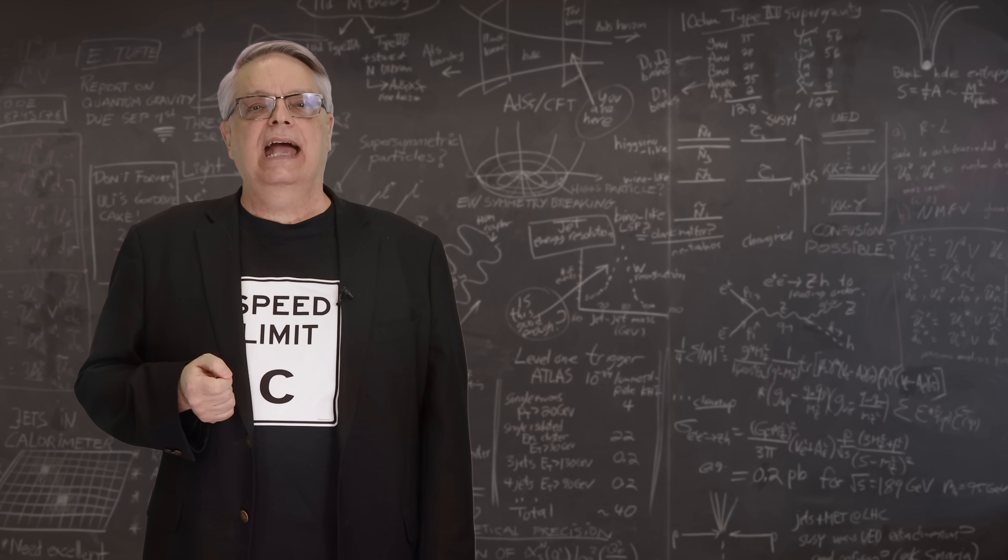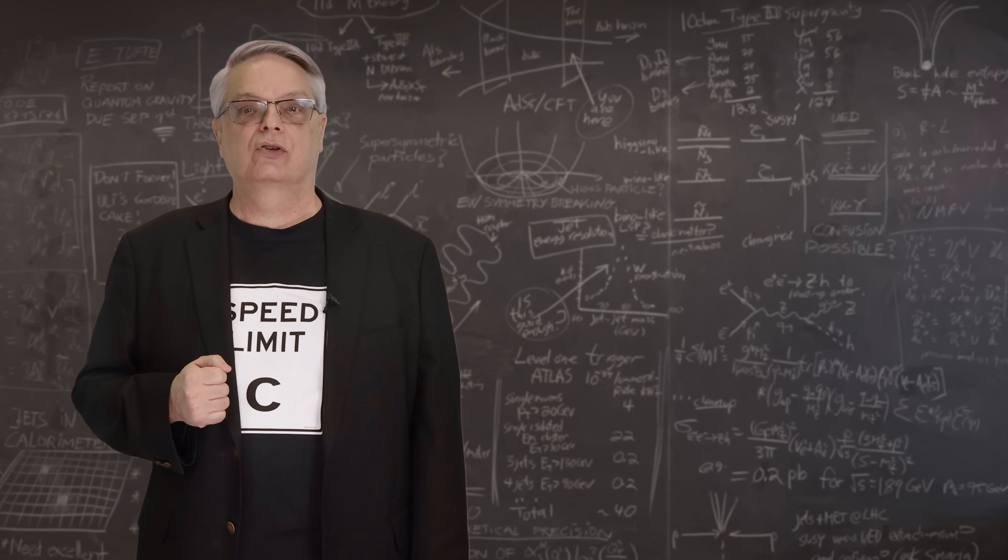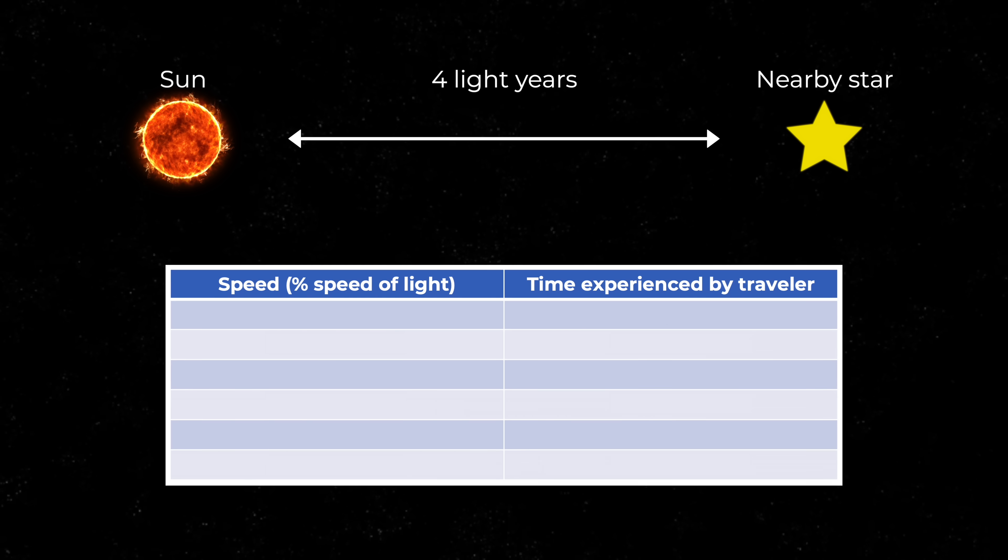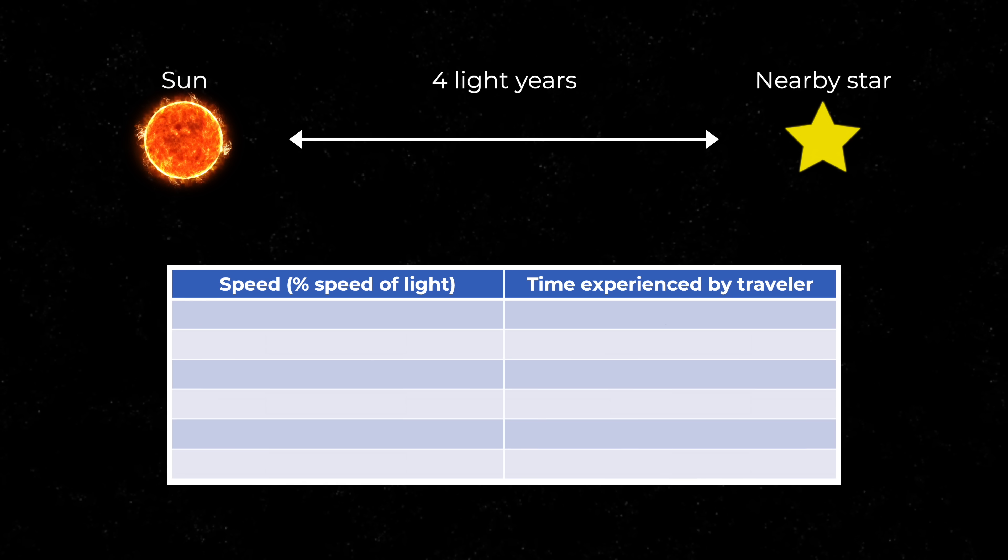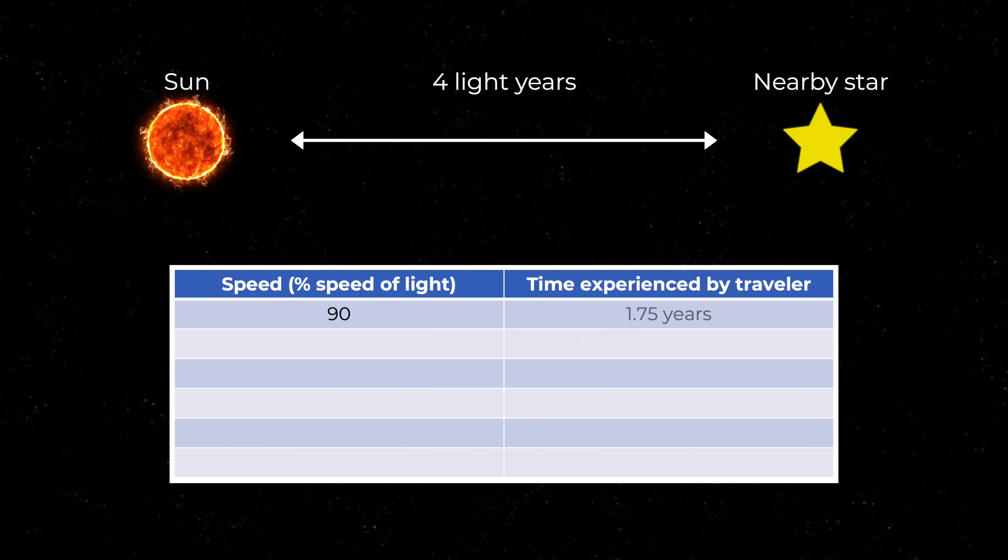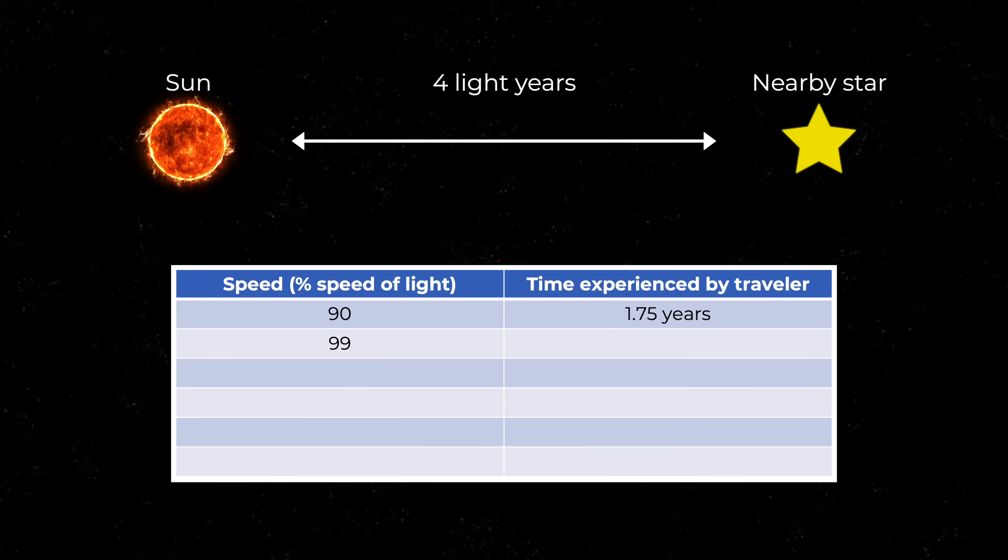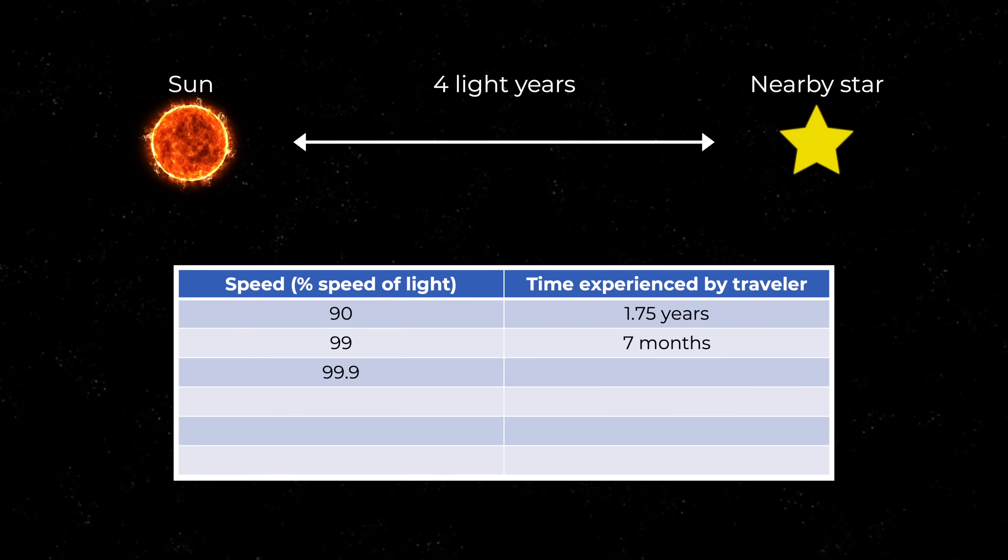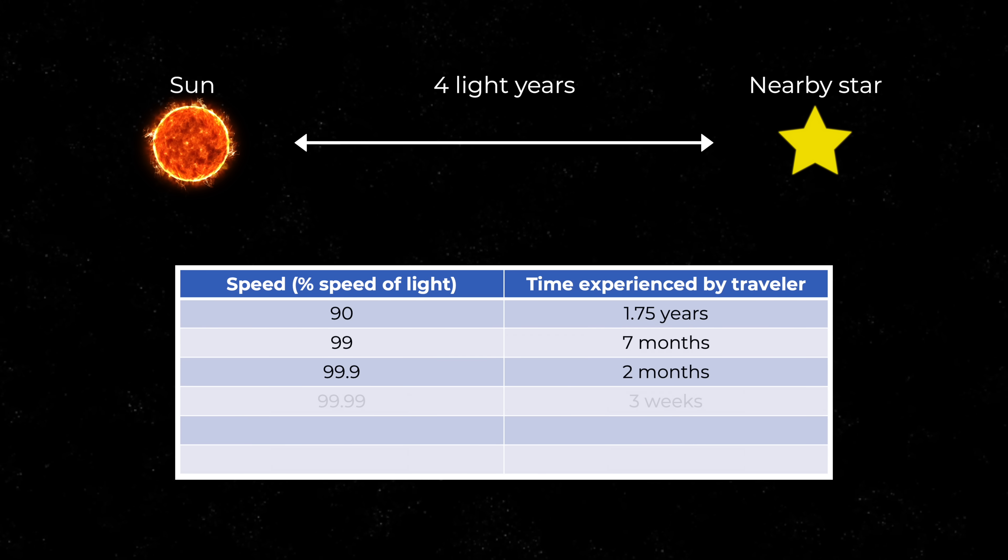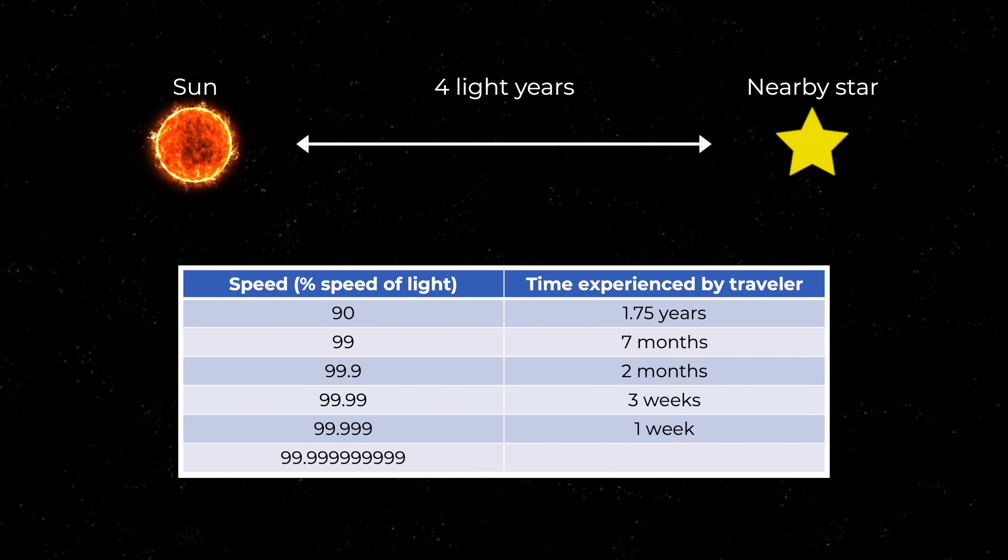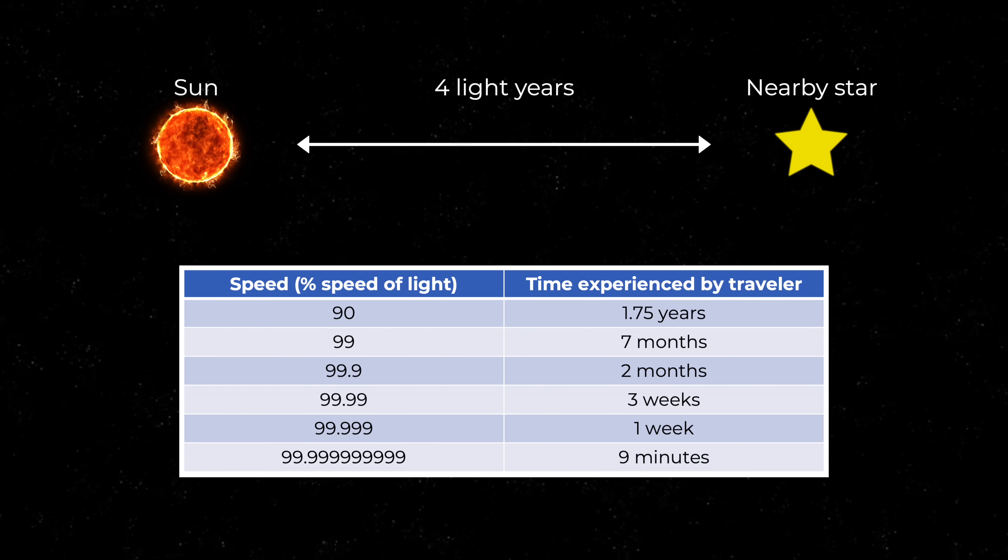So let's do that and ask how long a super-fast object will think it takes to get from Earth to the nearest star. The nearest star is about 4 light-years away, so a person on Earth will say it takes 4 years to get there. How much time will a person traveling at 90% the speed of light take? Roughly a year and 9 months. How about at 99% the speed of light? A little over half a year. 99.9% the speed of light? About 2 months. We can continue this trend, at the staggeringly fast speed of 99.9...9% the speed of light, it will take a bit shy of 10 minutes.